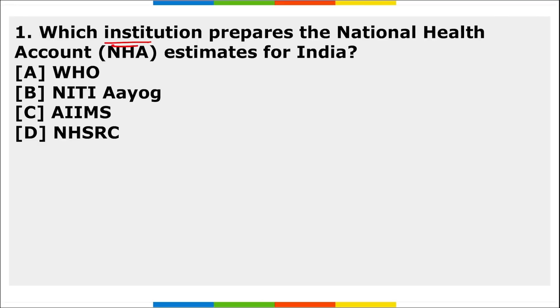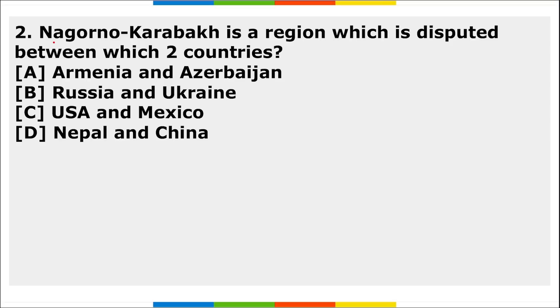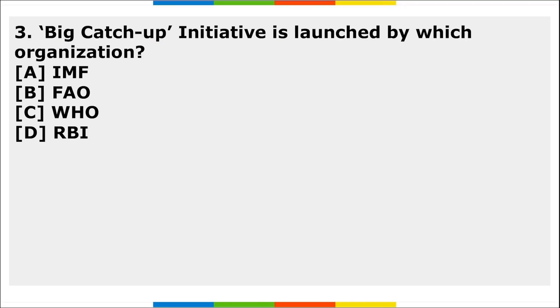Homework questions: First, which institution prepares the National Health Account Estimate for India? Second, Nagorno-Karabakh is a region disputed between which two countries? Third, the Big Catch-Up Initiative is launched by which organization? These are important current affairs for you to research.